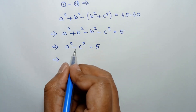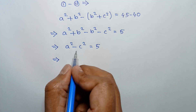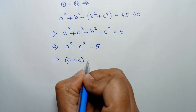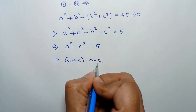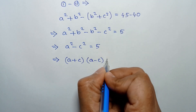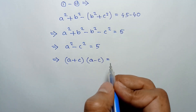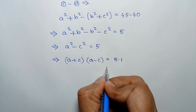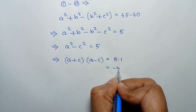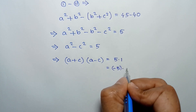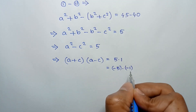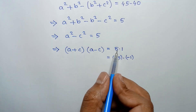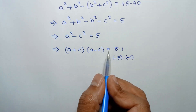Now a squared minus c squared can be written as (a plus c) times (a minus c), which is equal to 5. For integer solutions, this can be written as 5 times 1, or negative 5 times negative 1.